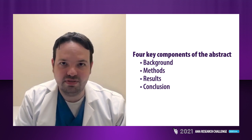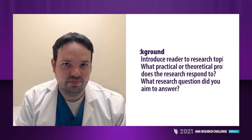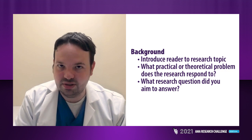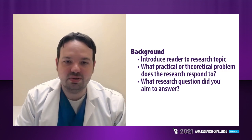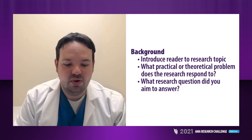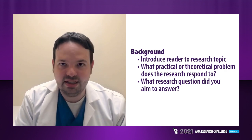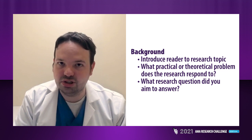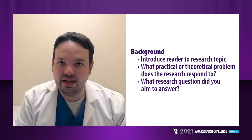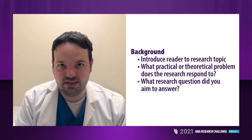We're going to go through each of these step by step. Let's start with background. This is where you introduce the reader to your research topic. What practical or theoretical problem does the research respond to? What research question did you aim to answer? In just a few sentences, you want to introduce the reader to your topic and highlight what question you're trying to answer with your investigative work.